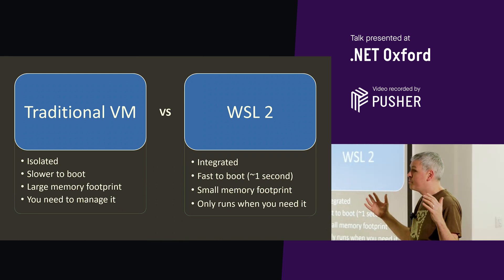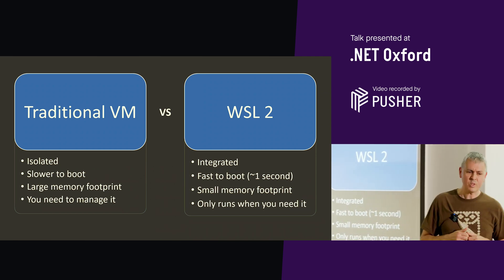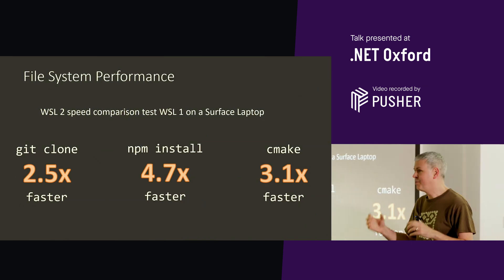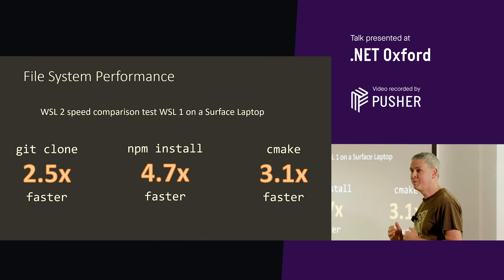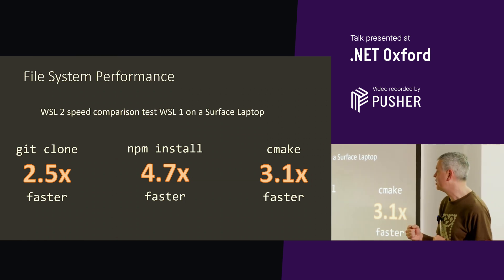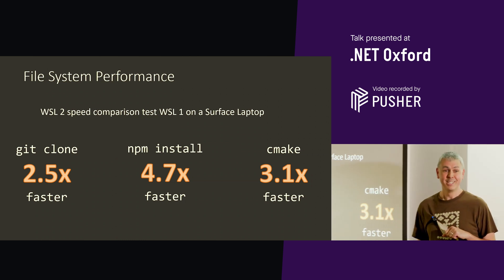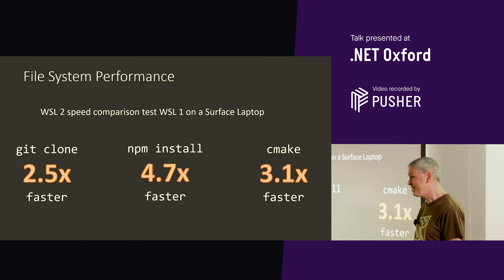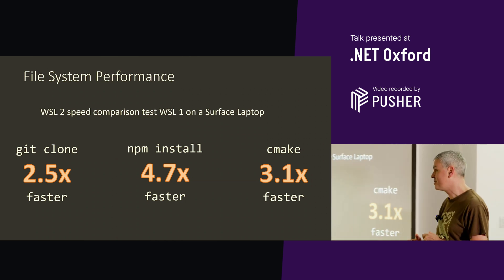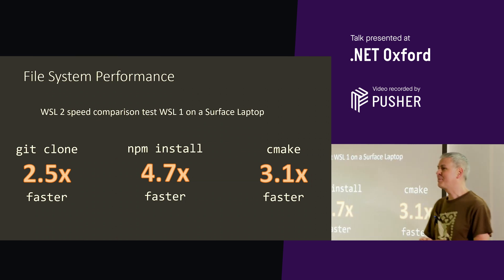They've got the piece over the top that brings back the integration of the user mode pieces. So all in all, you take a new model for VMs and you run the Linux kernel. The people from the WSL team at Ignite used a Surface laptop to do some benchmarking of WSL1 versus WSL2. Git clone of the VS Code repository was two and a half times faster in WSL2. Doing an NPM install from that repo was 4.7 times faster. Doing a CMake of the OpenCV project was 3.1 times faster. Performance, I think it's fair to say, has improved just a little in WSL version 2.